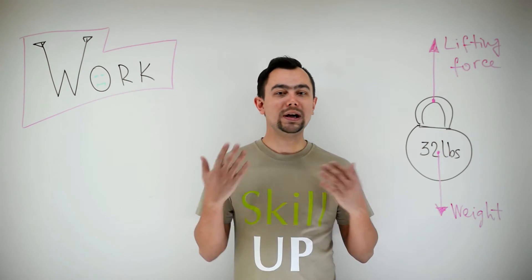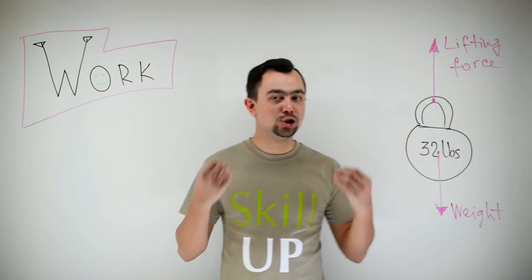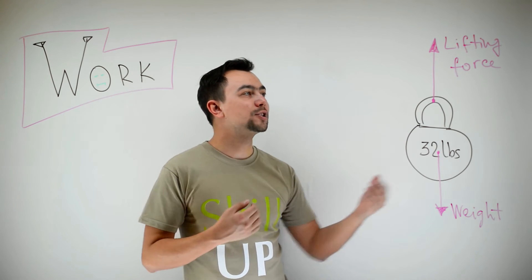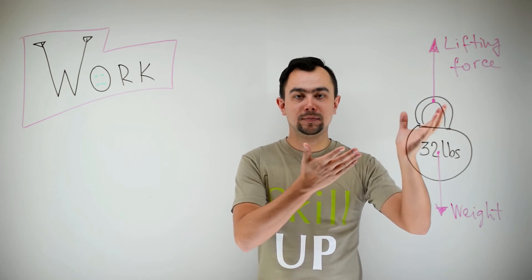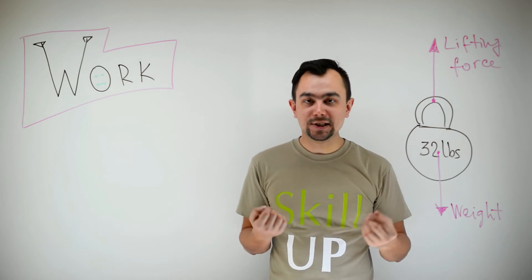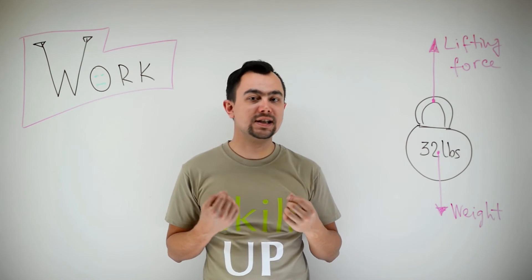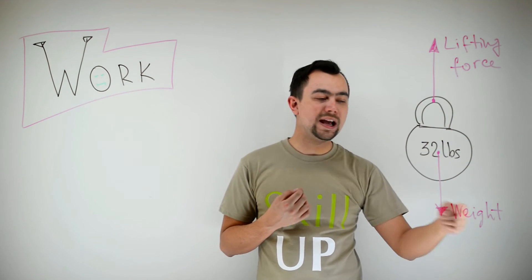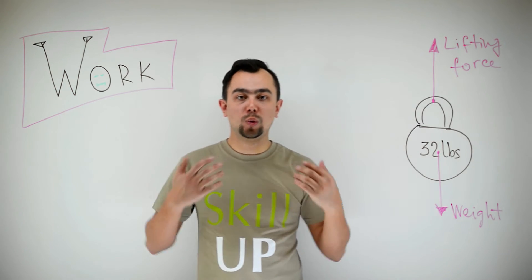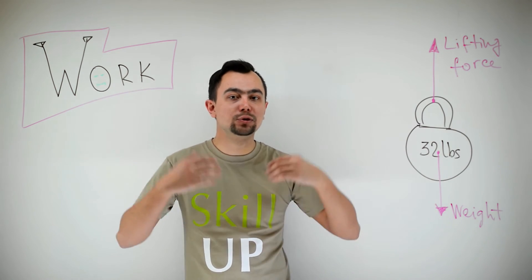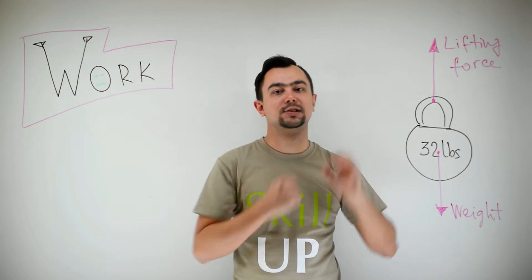When we lift objects, we do work, because a force is moving. To lift an object, we have to apply a force that is equal to the weight. So, we can find the work by multiplying weight by the vertical distance traveled.